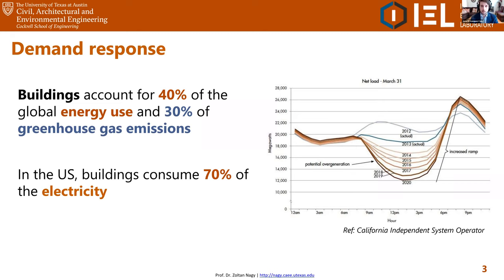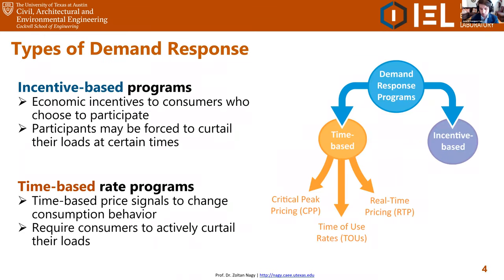Even if we reduce the electricity we consume, if we still have very high peaks at certain times, the cost of electricity might be higher because we may need to increase the sizing of the power system, investing in bigger transformers, making the electric power infrastructure more expensive. Also, having very sharp valleys or peaks leads to other problems because we need to generate electricity very fast, typically by using combined cycle power plants that consume a lot of natural gas.